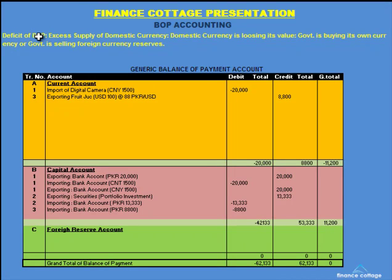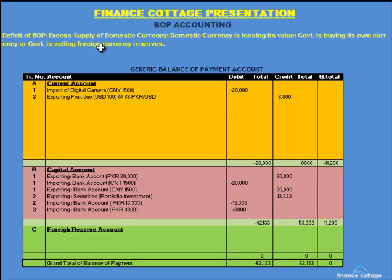The surplus of balance of payment would mean excess demand of domestic currency, or domestic currency is appreciating in its value. The government is selling its own currency, or the government is buying foreign currency reserves, meaning foreign currency reserves of the government are increasing.